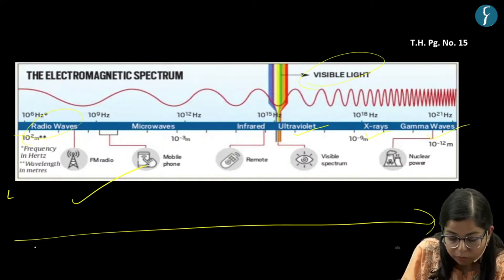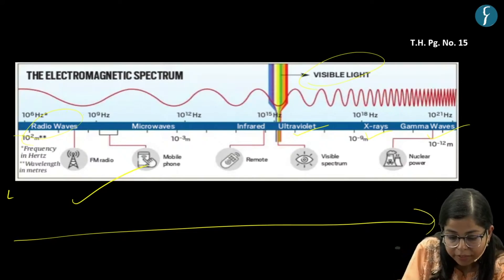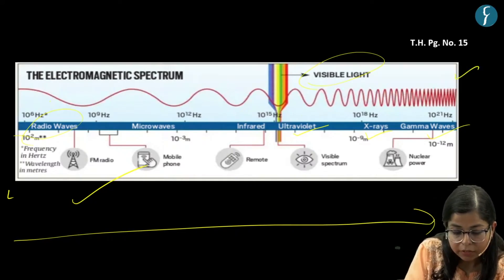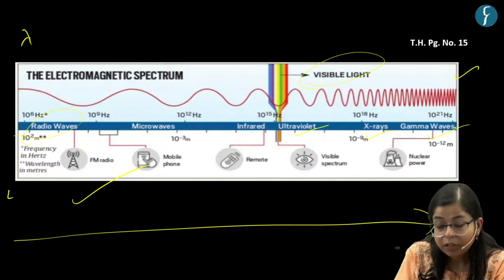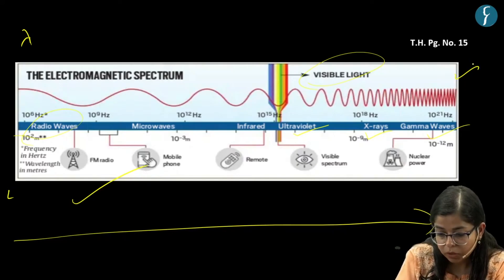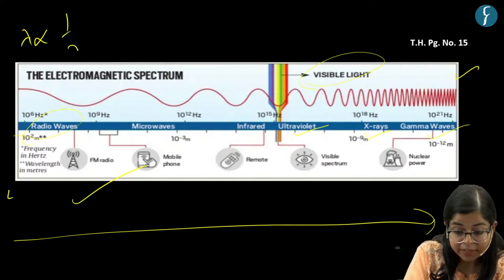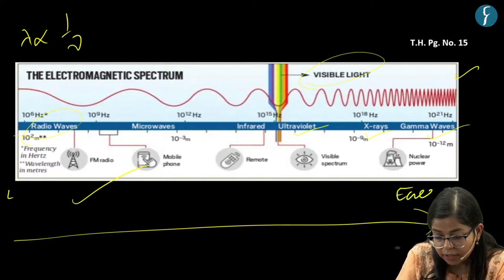As we move from the left-hand side of this spectrum to the right-hand side, the wavelength of these radiations decreases. The wavelength of radio waves is the longest. Wavelength is inversely proportional to frequency or energy, so gamma waves have the highest energy or highest frequency.